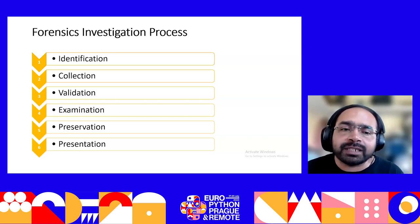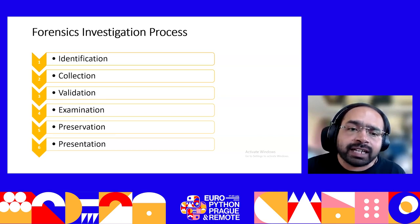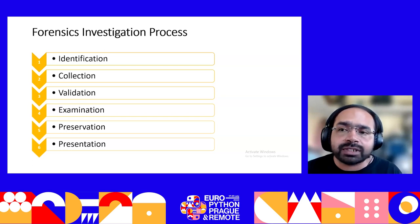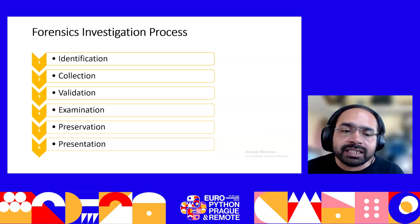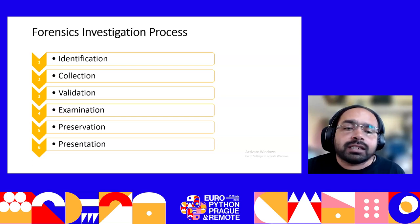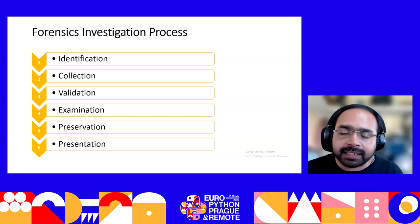After collecting the information, they need to validate it. In the validation process, they verify that the evidence is valid and has not been tampered with. During examination, the investigation officers work on a copy of the data, not the original, and they use hashing algorithms for integrity checks. After examination, the evidence should be preserved in a safe place. In the final presentation step, if the procedure set by law enforcement agencies and the court has been followed, the evidence is acceptable in court; otherwise, the court will not consider it valid.